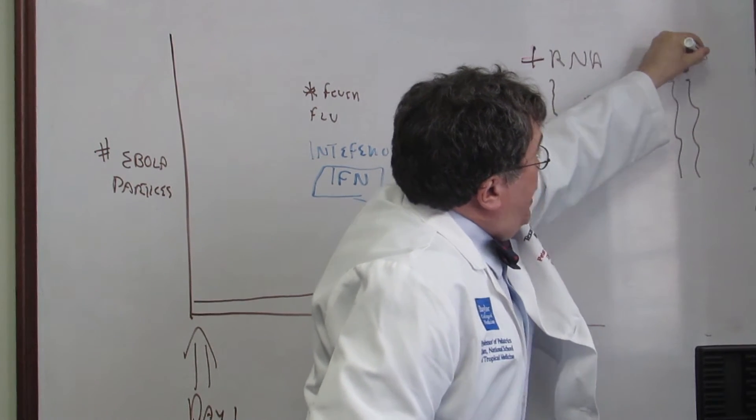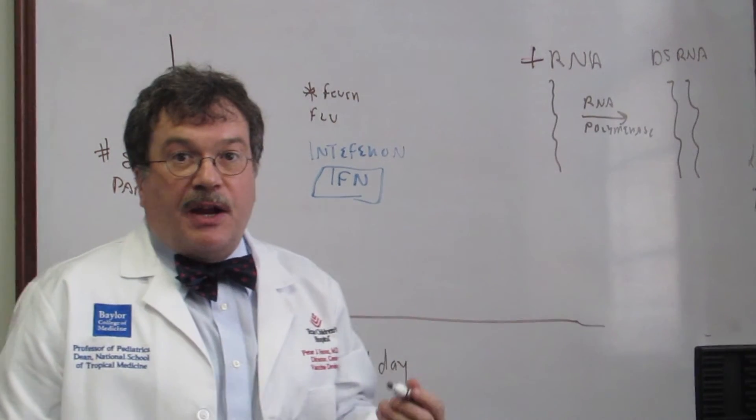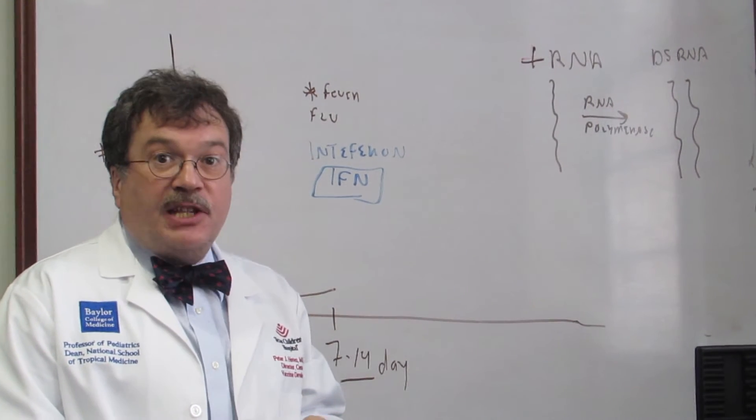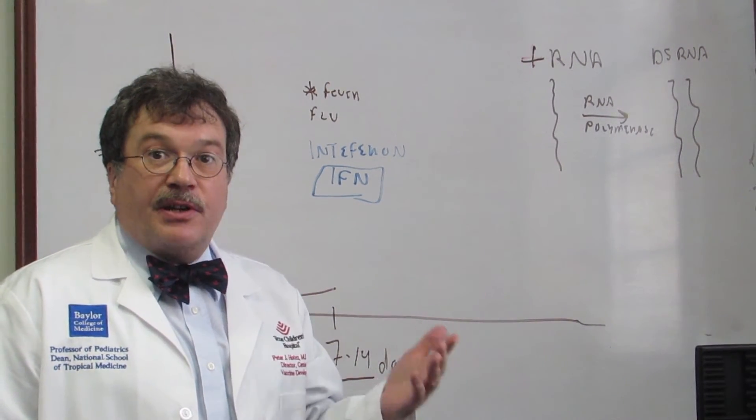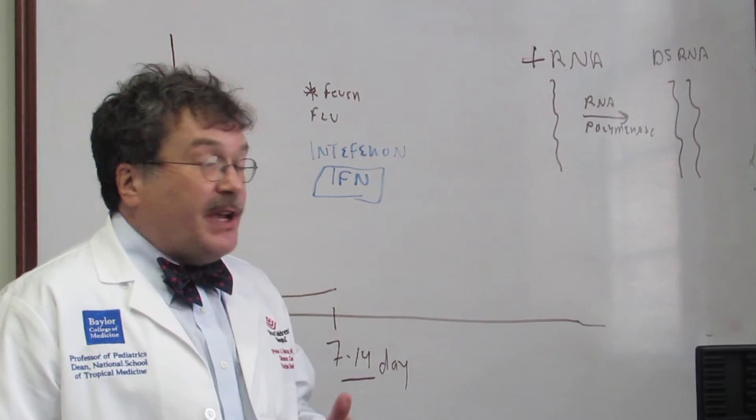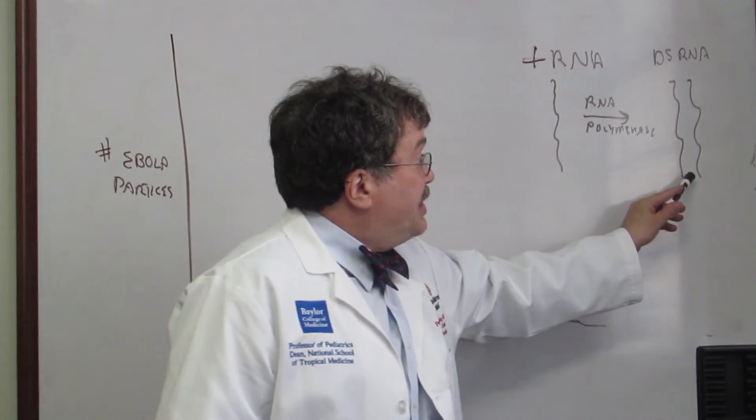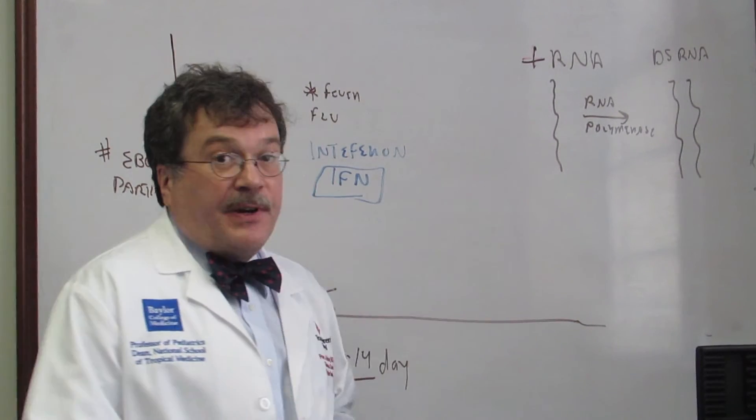Well, the only time the human body ever sees double-stranded RNA, practically speaking, is when it sees a virus. So double-stranded RNA is the hallmark feature of many virus infections, including Ebola virus. This is a trigger to the body to start producing interferon.